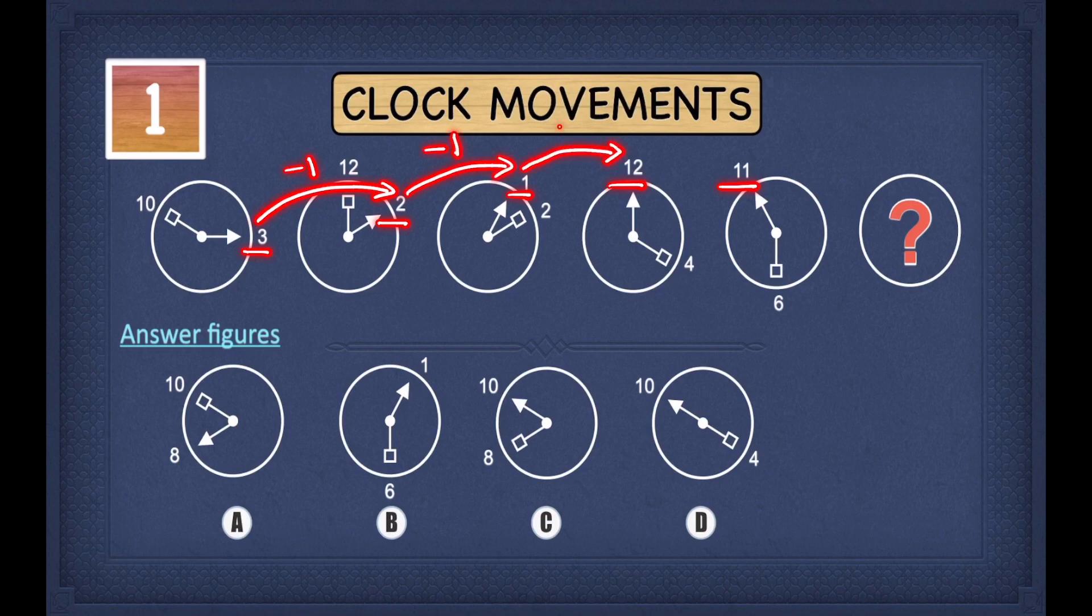To get from one to twelve, you have to take away one again. Because in a clock, if you're taking away one, you're moving one number back in the clock. Which means if you're taking away one from one, you're moving one number back, so therefore you get twelve.